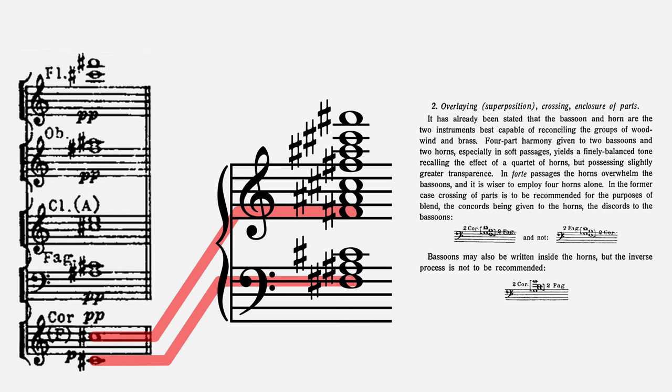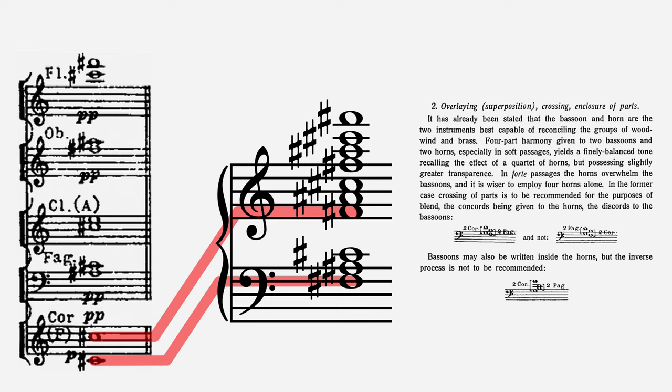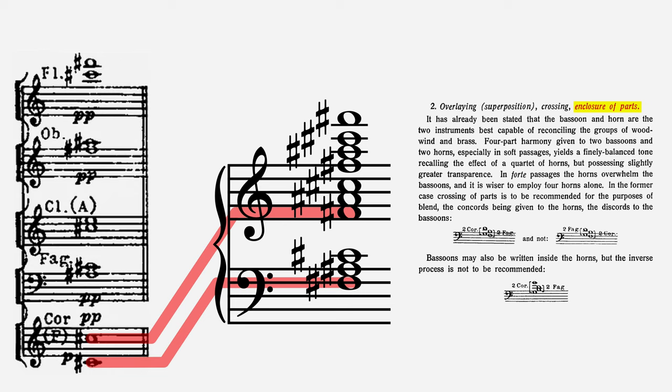Probably the lesson that was intended the most here was in the role of the horns, rooting the F-sharp major chord with this F-sharp octave. Their sonority is what makes the upper winds glow so radiantly, especially in this pianissimo dynamic. Add to this Rimsky-Korsakov's concern that his readers should understand the concept of the enclosure, in which two instruments of one type enclose another instrument or instruments between them. In this case, it's the horns on the root, enclosing the bassoons on the mediant and dominant of the chord.